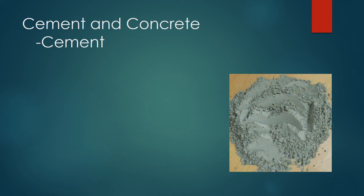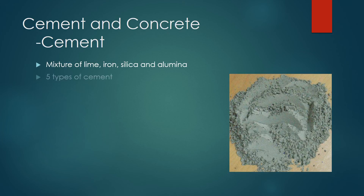The first ingredient in concrete is cement, otherwise known as Portland cement. Cement is a mixture of lime, iron, silica, and alumina. There are five types of cement. The most commonly used is type 1, and most U.S. producers produce a mixture of type 1 and 2.